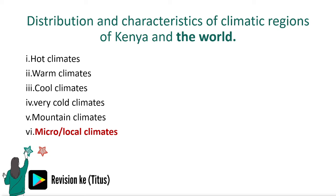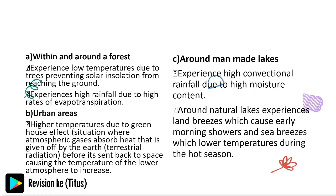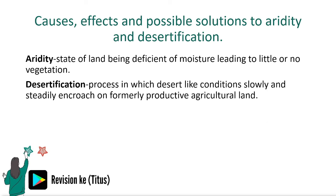Let's look at the causes, effects, and possible solutions to aridity and desertification. Aridity is a state of land being deficient of moisture, leading to little or no vegetation. Desertification is a process in which desert-like conditions slowly and steadily encroach on formerly productive agricultural land.